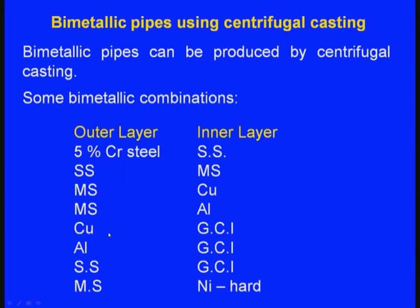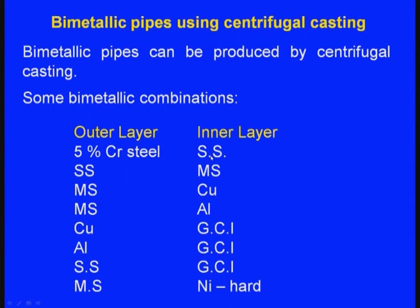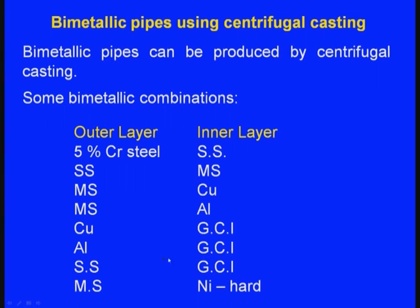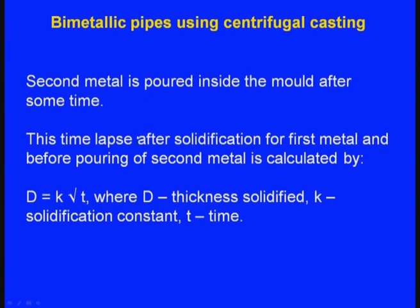Some bimetallic combinations include: outer layer of 5% chromium steel with inner layer of stainless steel; outer stainless steel with inner mild steel; outer mild steel with inner copper; outer mild steel with inner aluminium; outer copper with inner GCI; outer aluminium with inner GCI; outer stainless steel with inner GCI; and outer mild steel with inner nickel hard steel. The second metal is poured after a time lapse, calculated by d = k√t, where d is the thickness solidified, k is the solidification constant, and t is the time.